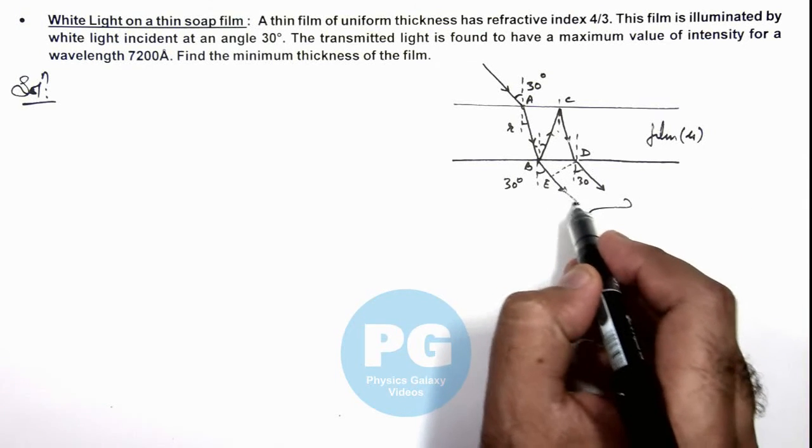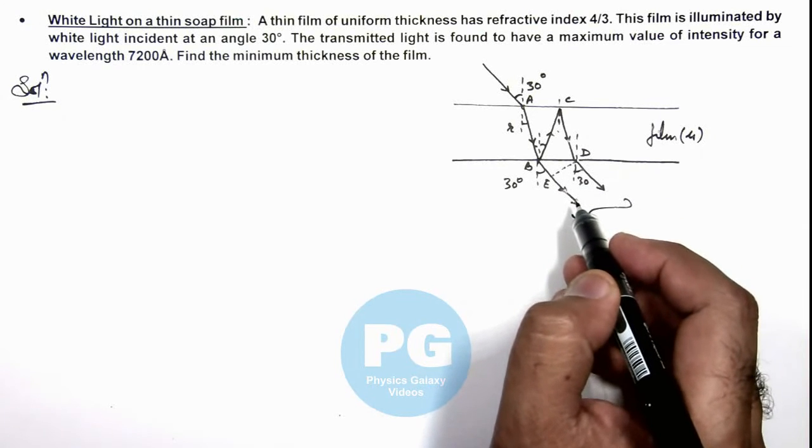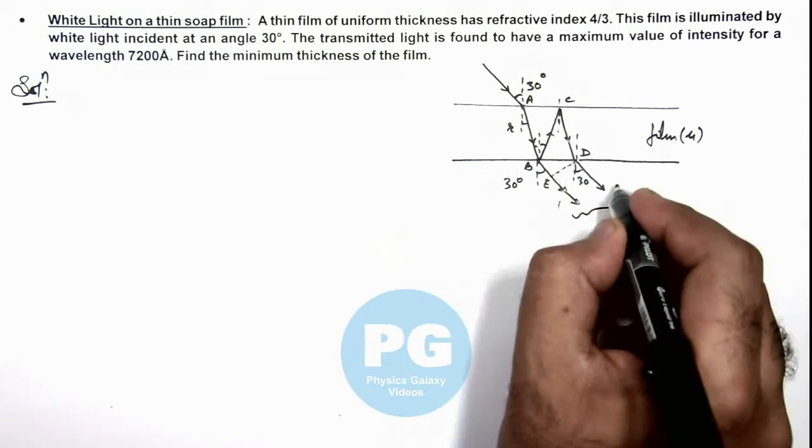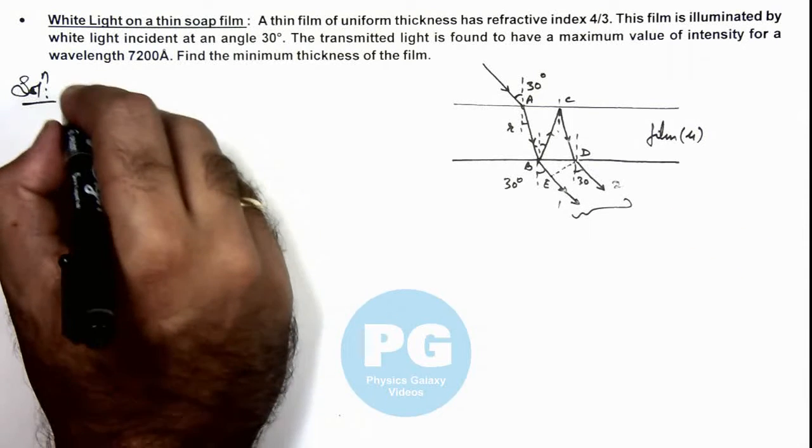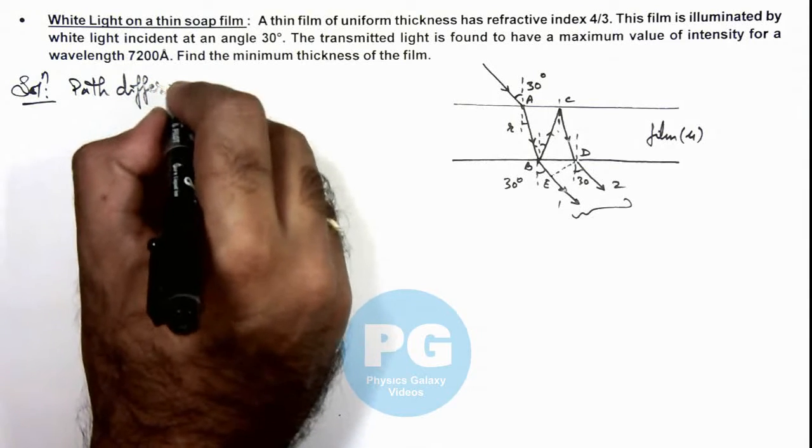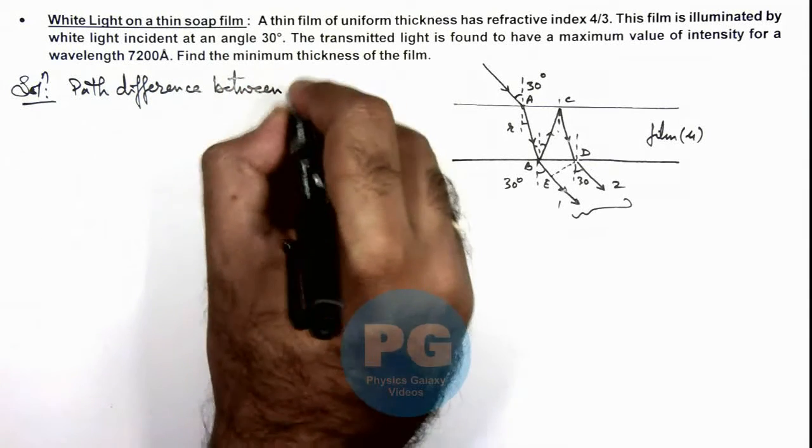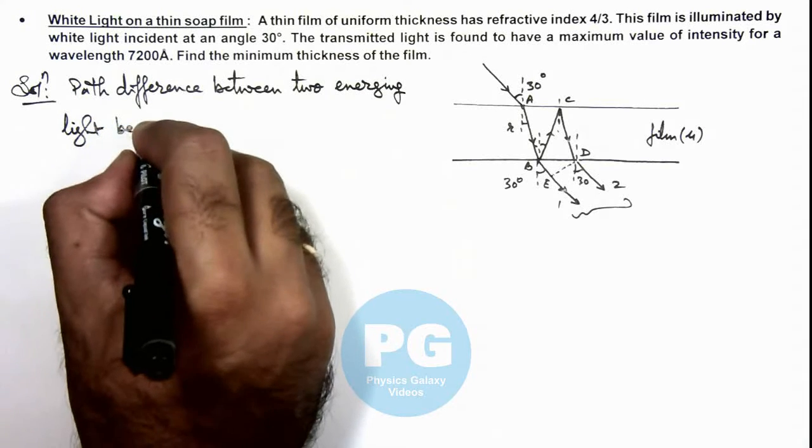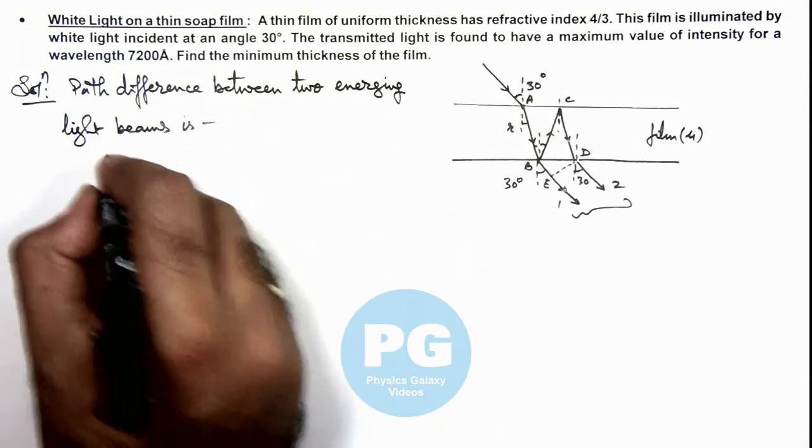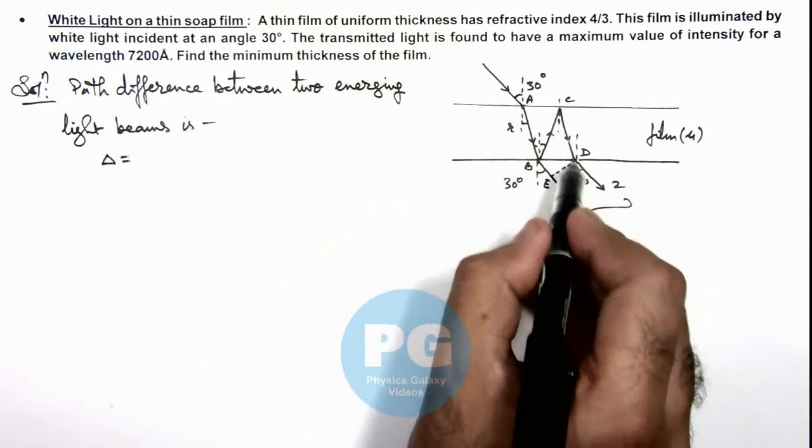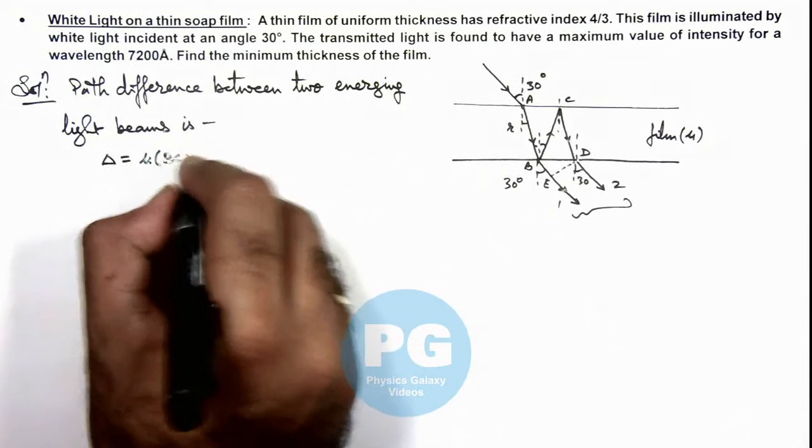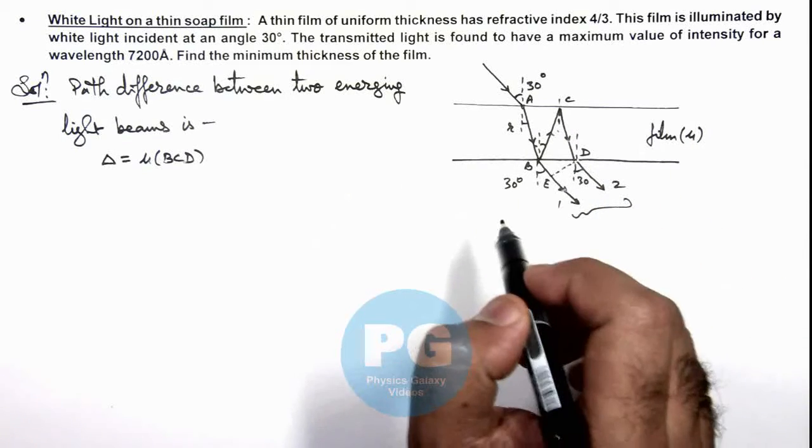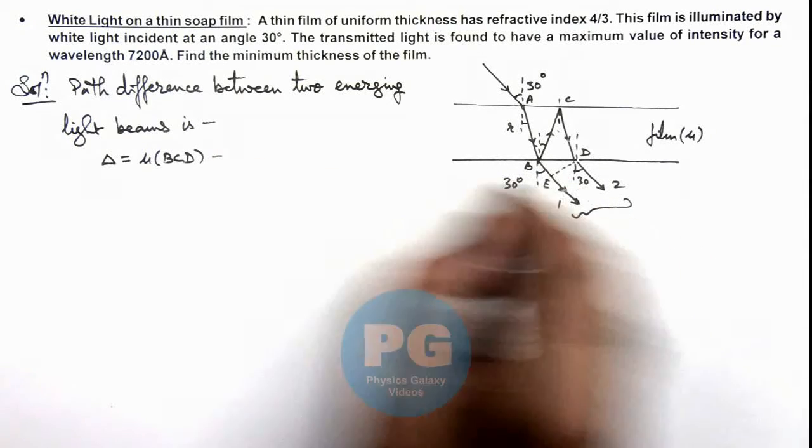And if we talk about the wavefront of this beam which is the normal cross section of the two beams, here we can write the path difference between point D and E can be analyzed. We can write if this is emerging beam 1 and this is emerging beam 2, then the path difference between two emerging light beams is delta, and for the second we can write this path is BCD. So we write it mu times the path BCD, we are multiplying it with mu because the film is having a refractive index mu, and the optical path in air will be mu times the physical path traveled by the light in this medium, minus this path in air is BE.